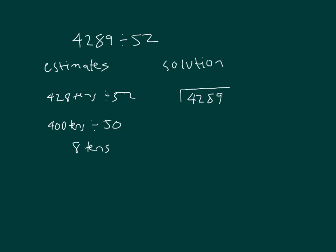Four thousand two hundred eighty-nine divided by fifty-two. Start with the eight there in the tens place. And eight times fifty-two: eight times two is sixteen — six, regroup of one. And then eight times five is forty. So I subtract those two to get one hundred twenty-nine.